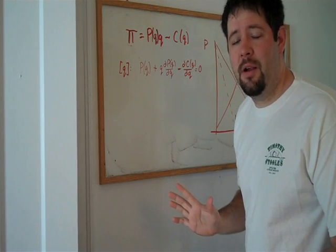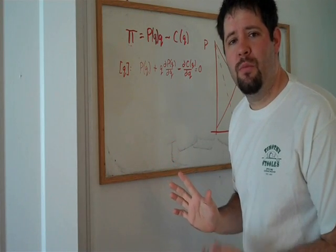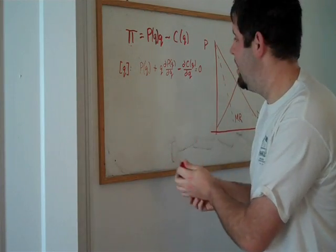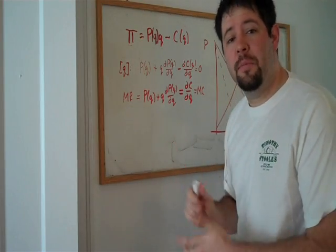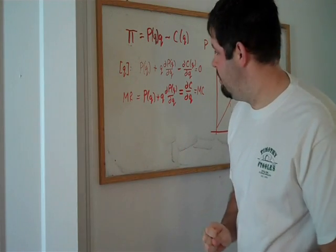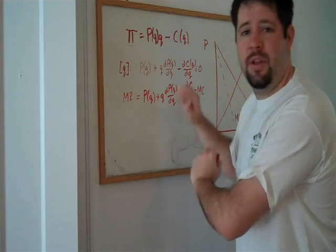Now, we can rearrange some terms here and label some things, and what we'll see is that this is just our marginal revenue equals marginal cost. And this is what we showed from the last video is the condition that we used to get the quantity. So this is how, in general, you would do this.